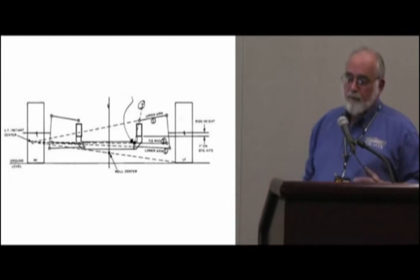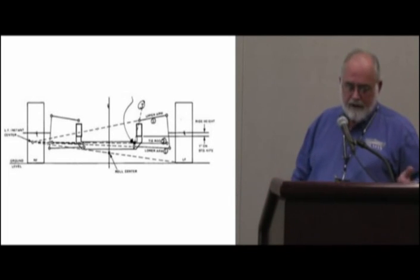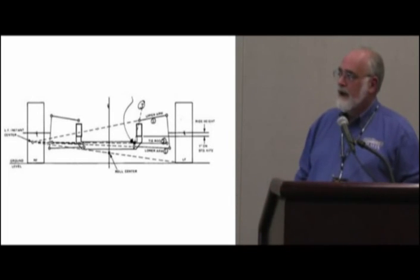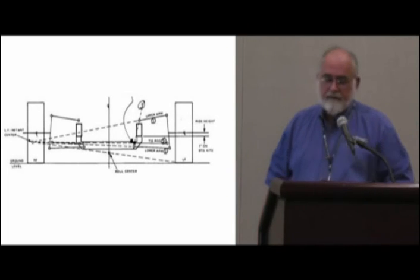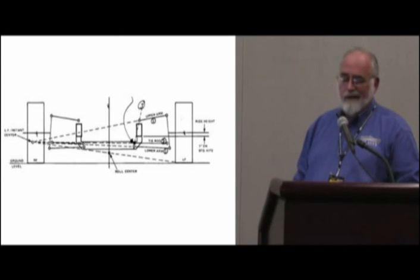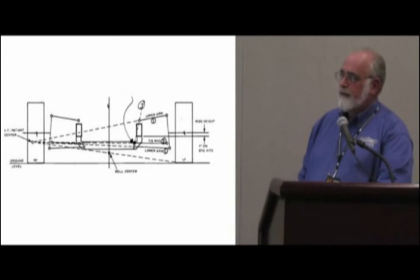And GM went back to this poor geometry in those G-body cars, the S10, the 78-87 Monty's and Malibu's. And frankly, that's one of my personal objections to seeing S10 frames put underneath a lot of cars because it's really a lousy front end. They've got lousy geometry and lousy brakes.